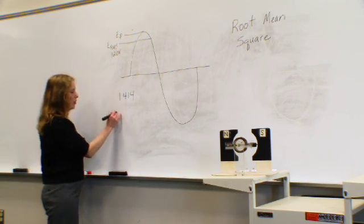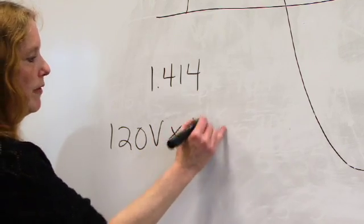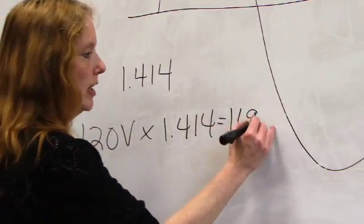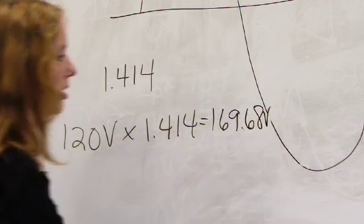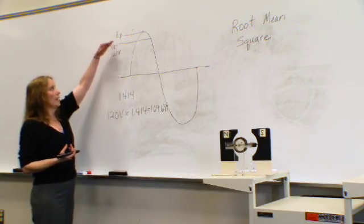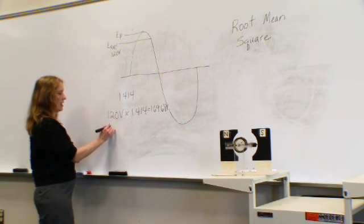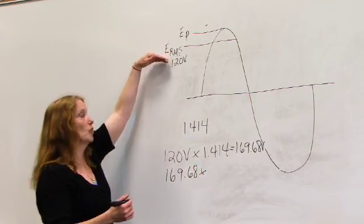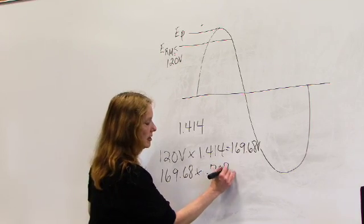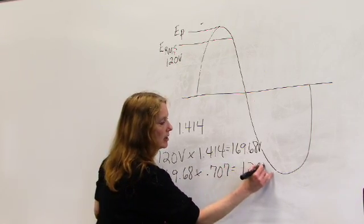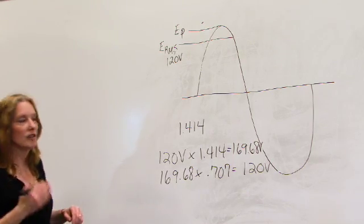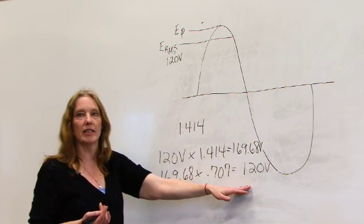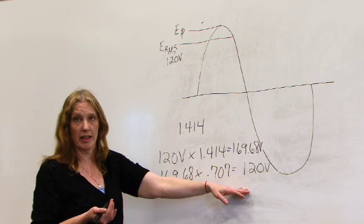So by taking my 120 volts times 1.414, I am able to get that peak value of 169.68 volts. Turn it around and let's say I have E peak of 169.68. I am then able to take that 169.68 times the value difference, which is .707 of my RMS, and I would then come up with my 120 volts. So RMS is basically that average value, taking all positive values to get the voltage that we effectively use on a day-to-day basis.